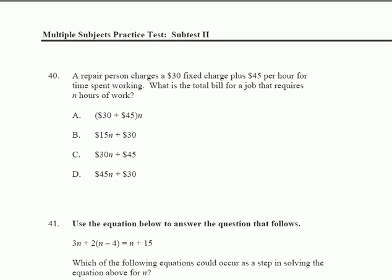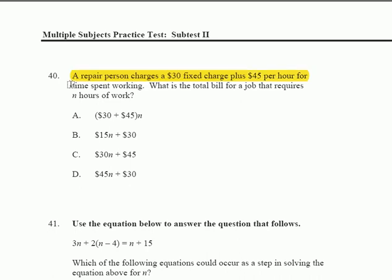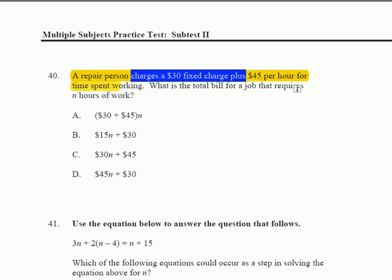Question 40 is just finding a simple algebraic representation. It says a repair person charges a $30 fixed charge plus $45 per hour for time spent working. What's the total bill for a job that requires N hours of work?